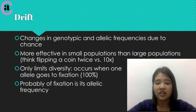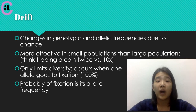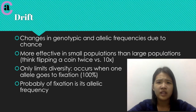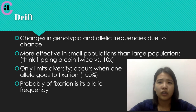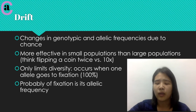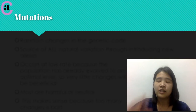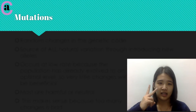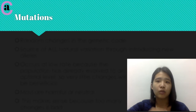With drift, the only way it can affect gene frequencies is by limiting diversity. The probability of fixation depends on the allelic frequency. I have another video where I talk about drift in more detail if you want to learn more. The second method that you can change allele frequencies is through mutations.